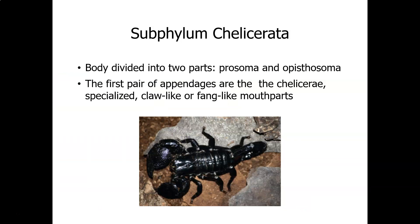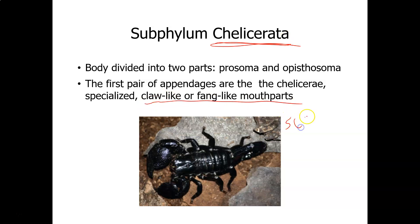The subphylum Chelicerata includes animals with fang- or claw-like mouthparts. This is a scorpion. Spiders are also in the Chelicerata, as are ticks and mites.